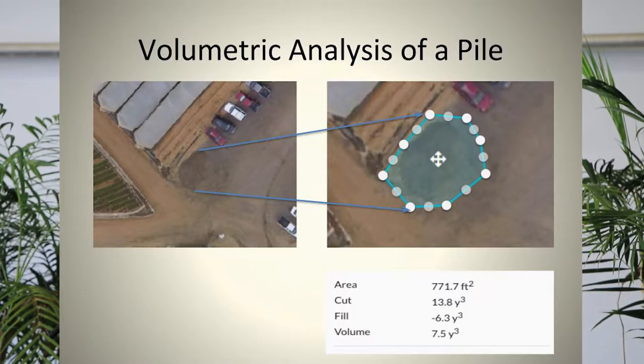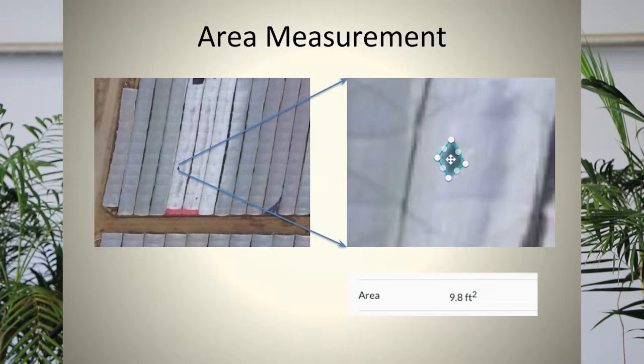Another application is volumetric analysis — you can pick up any object on the field. I found a pile last July that turned out to be 35 yards of material. You just tap the edges of the surface you want and the software calculates the volume of the pile or material above the ground. This is useful for estimating how much mulch or gravel you have, or assessing erosion damage after a flood.